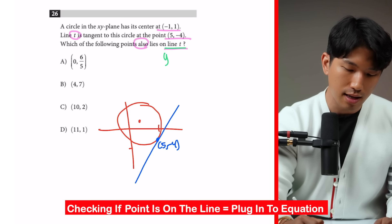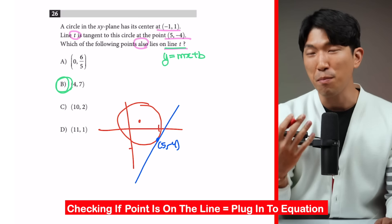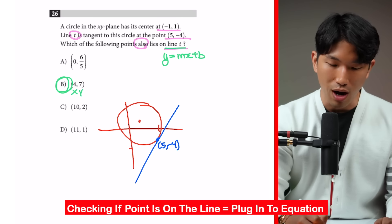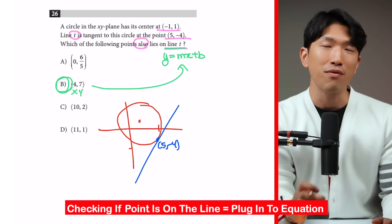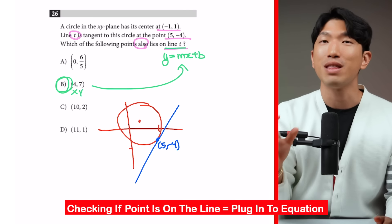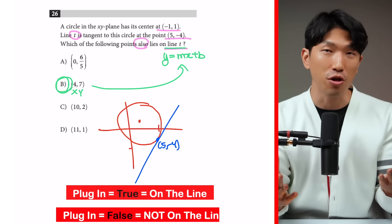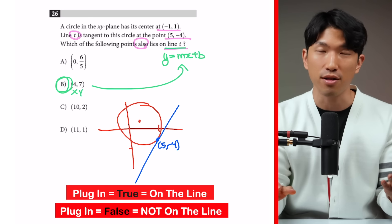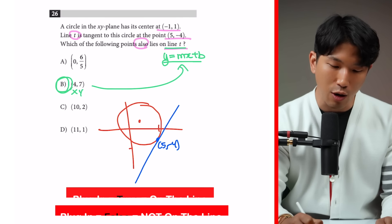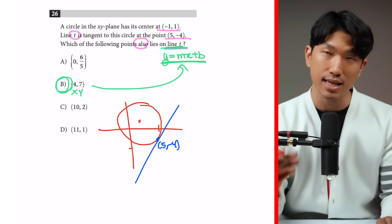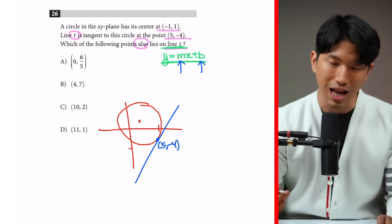To verify whether a point is on line T, we first need to get the equation of the line. Once we have the equation y equals mx plus b, we plug in the x and y values of each candidate point — if the equation is true, the point is on the line. So we need to find the slope m and the y-intercept b of line T.